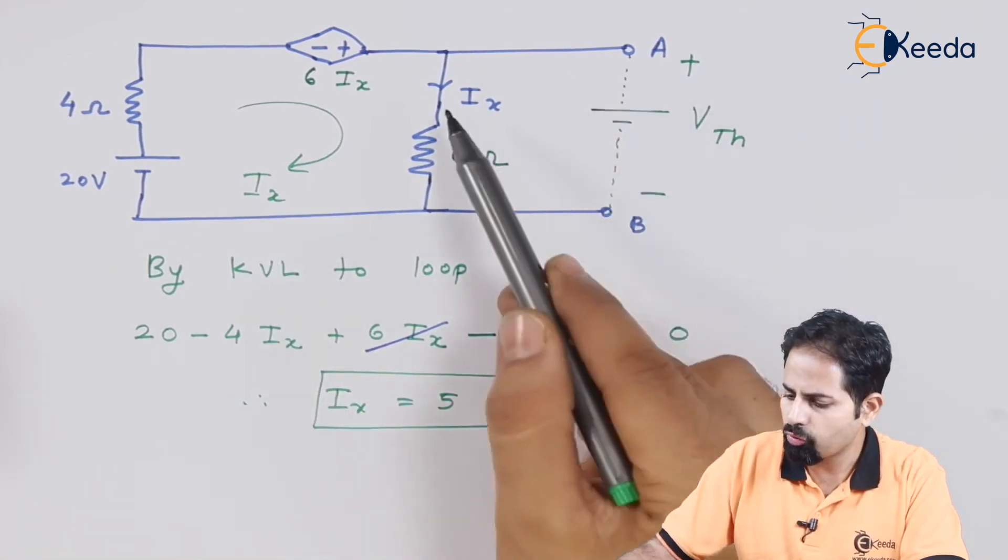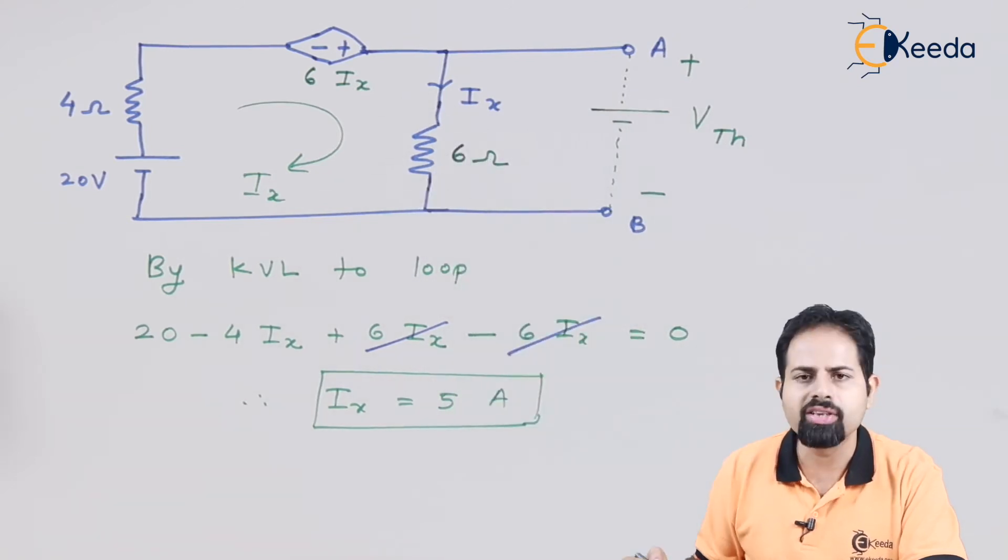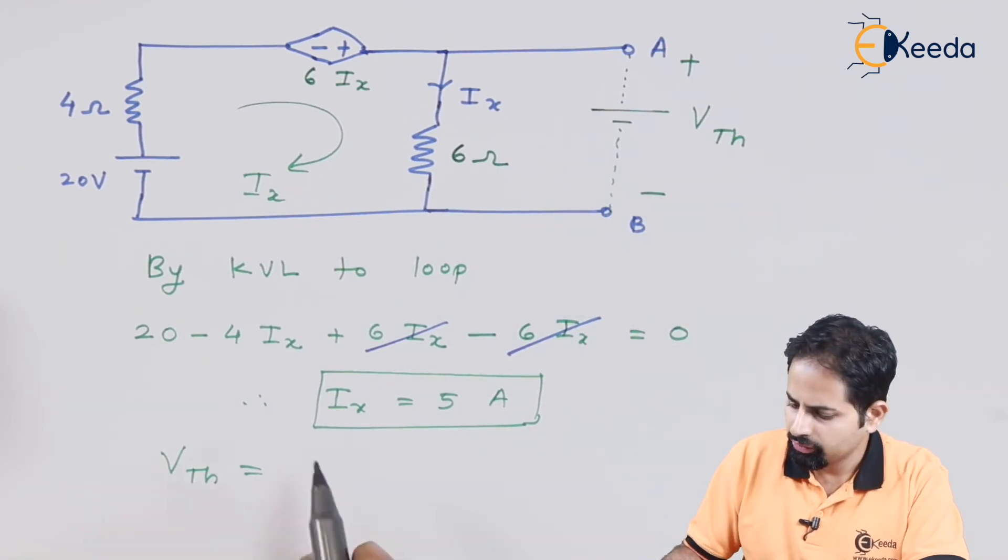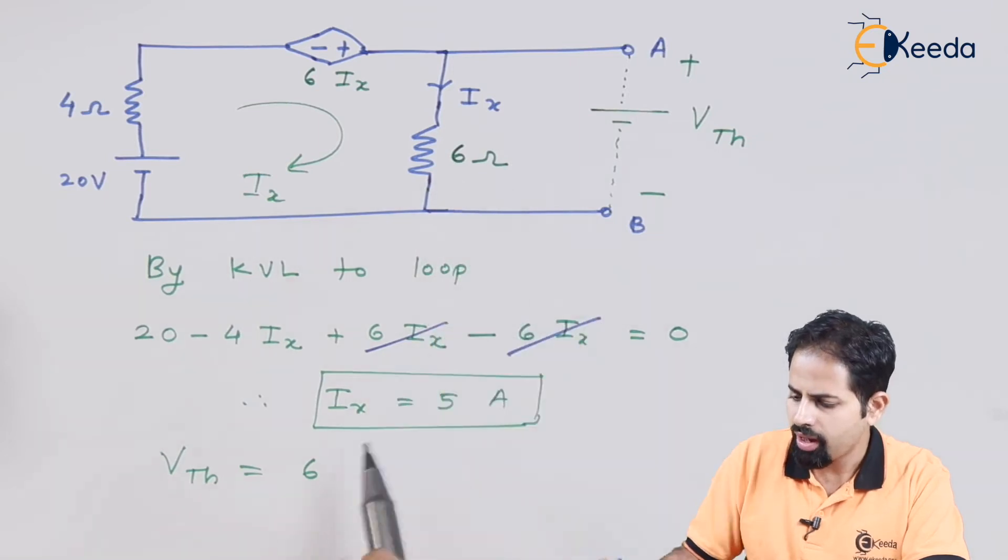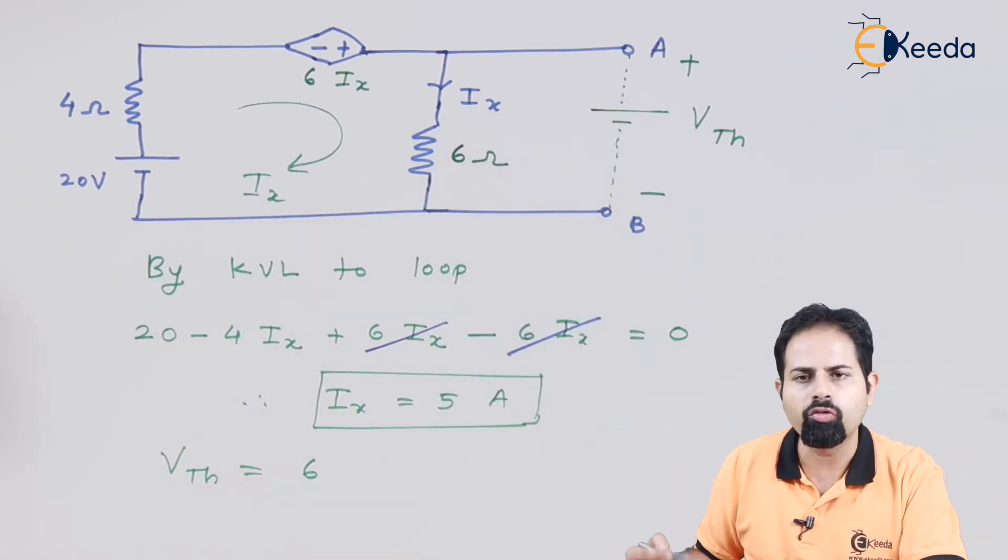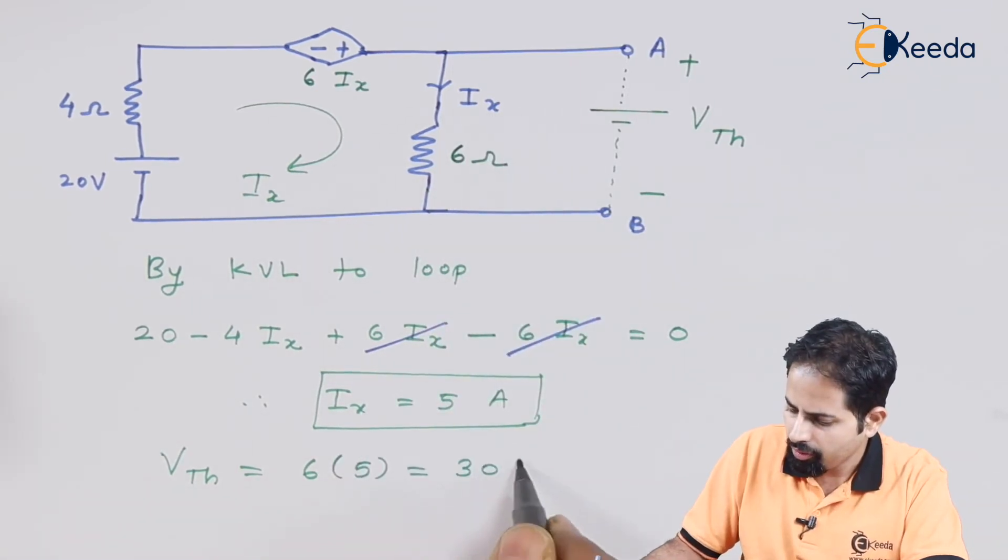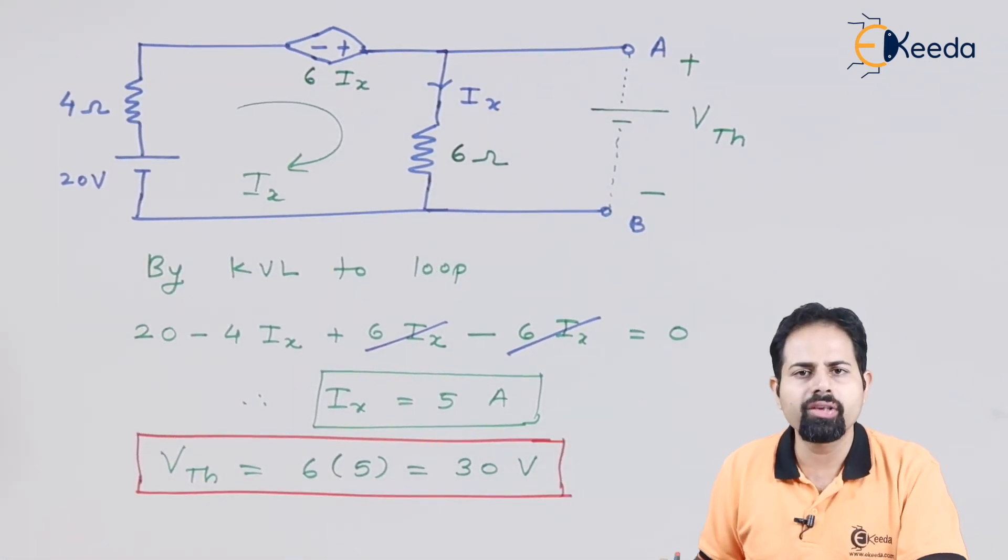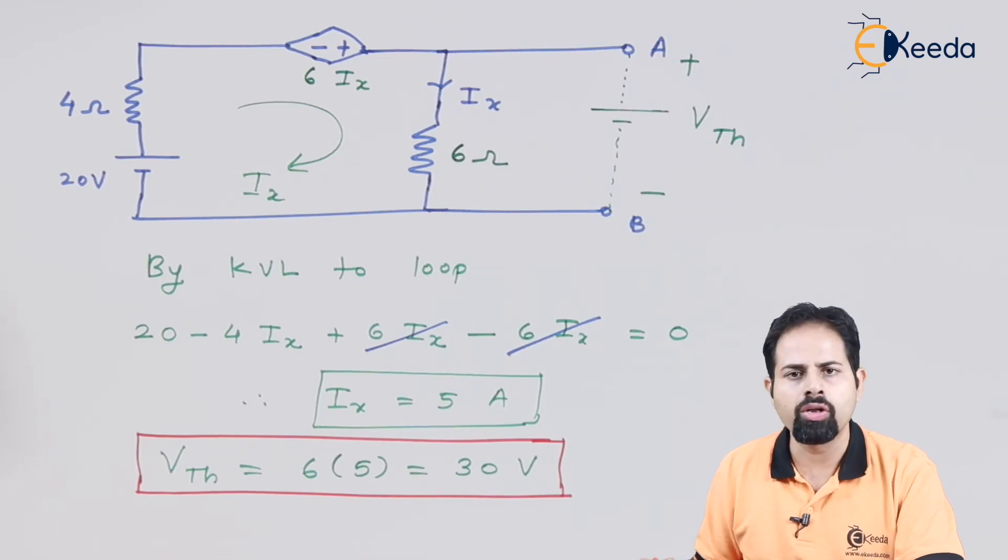So this current is what we have got equal to 5 ampere. Now Vth is nothing but voltage across this resistor which is of 6 ohm. So we can write Vth equal to voltage is resistance times current. So resistance is 6 ohms and current is Ix which is equal to 5 amperes.